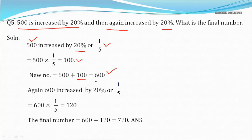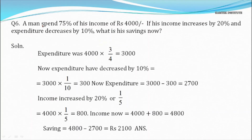Second increase: 600 is again increased by 20%. 600 × 1/5 = 120. So 600 + 120 = 720 is the final answer.